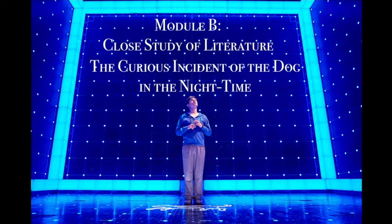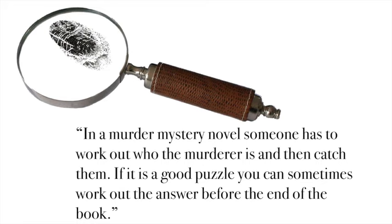Christopher Boone, the narrator of The Curious Incident, loves a good mystery, as he tells us: 'In a murder mystery novel, someone has to work out who the murderer is and then catch them. If it is a good puzzle, you can sometimes work out the answer before the end of the book.' In the opening chapters, Christopher reveals the mystery — a dead dog found impaled by a pitchfork on a suburban front lawn in the middle of the night. As Haddon's novel progresses, however, the reader recognises that this text is so much more than simply a whodunit, delving into the mind of a teenager with some form of autism spectrum disorder. As our narrator, Christopher places us in an unconventional position to see the mystery from his perspective, and this has a significant impact on the text's form and style. The result is a highly original and inventive narrative that enables readers to piece together the puzzle of the mystery, but also the puzzle of Christopher and his world.